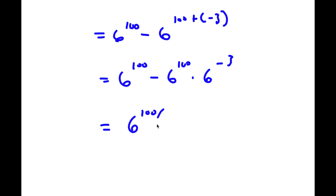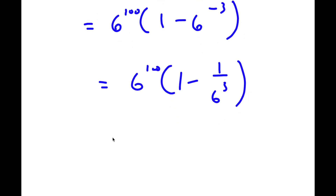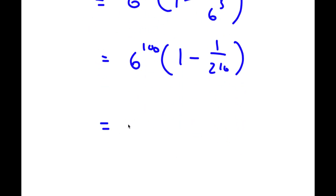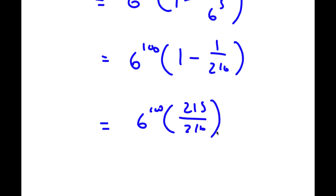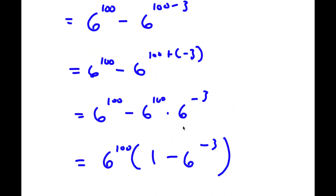From here, factoring out 6 to the power of 100 gives 6 to the power of 100 times the quantity 1 minus 6 to the power of negative 3. Now, 6 to the power of negative 3 is 1 over 6 to the power of 3, and 6 to the power of 3 equals 216. So I have 6 to the power of 100 times 1 minus 1 over 216, and 1 minus 1 over 216 equals 215 over 216. So 6 to the power of 100 times 215 over 216 is another way to write our answer.